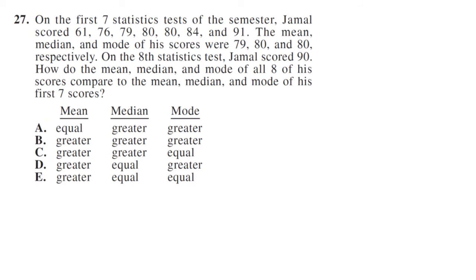On the first seven statistics tests of the semester, Jamal scored these scores. I'm just going to rewrite these. The mean, median, and mode of his scores were 79, 80, and 80 respectively. On the eighth statistics test, Jamal scored a 90. So he's going to score 90 on one more test. How do the mean, median, and mode compare to those first seven scores?